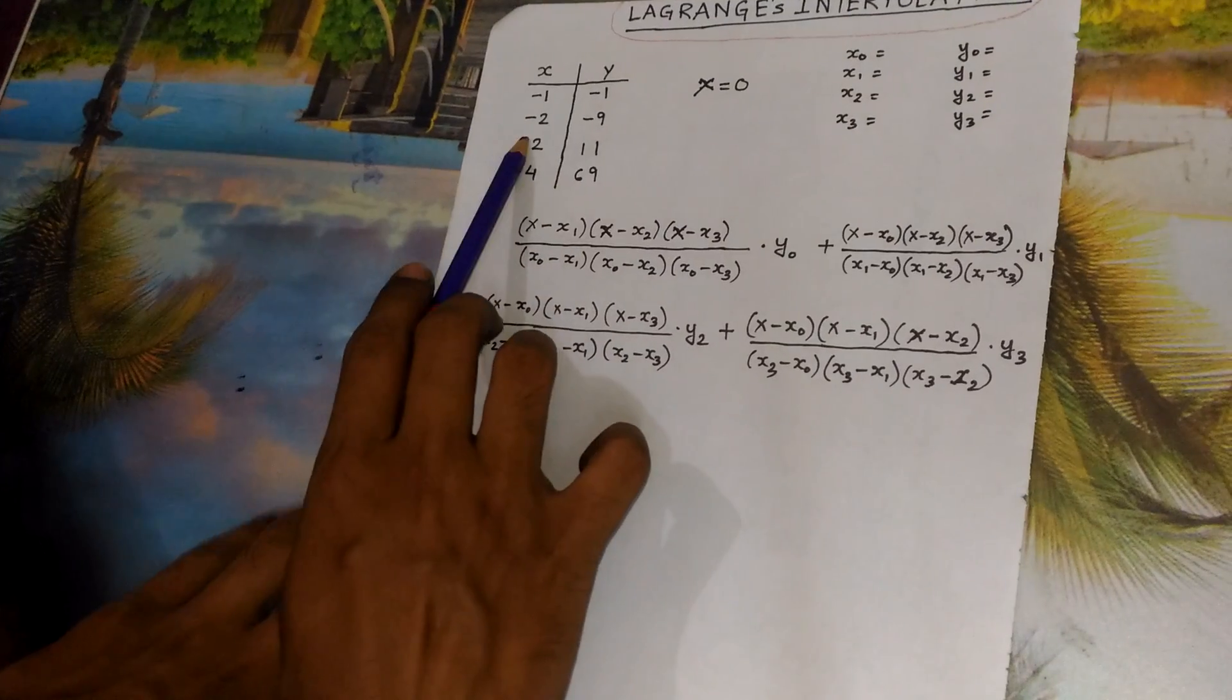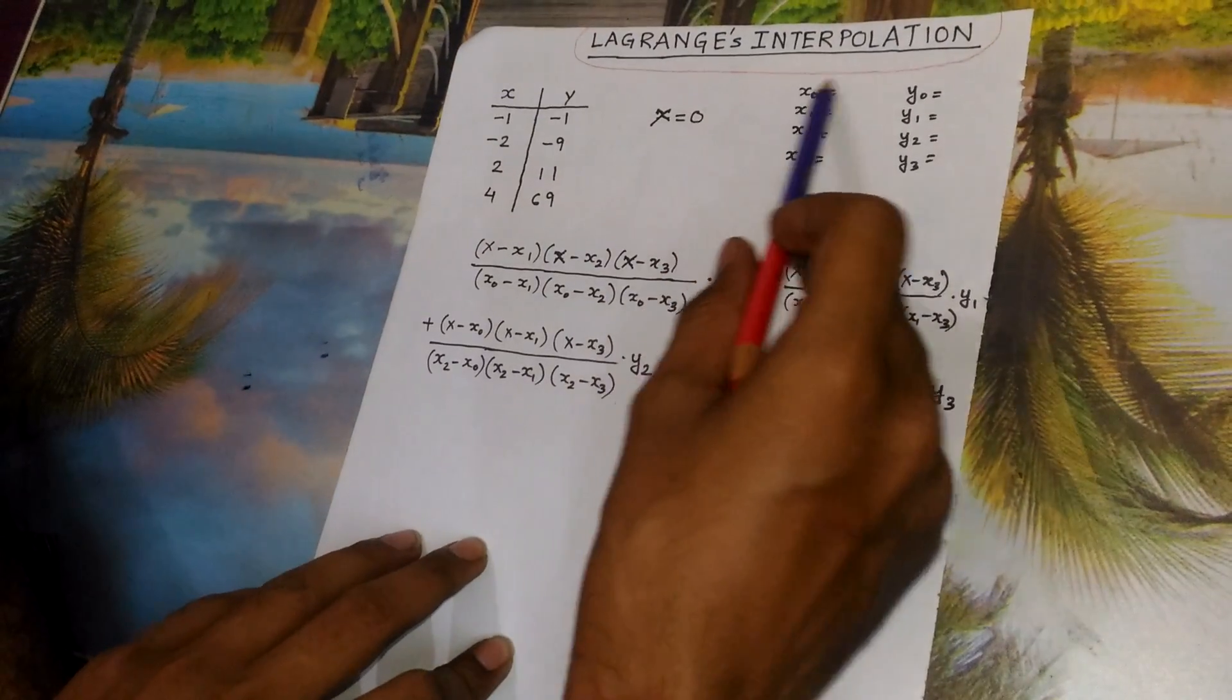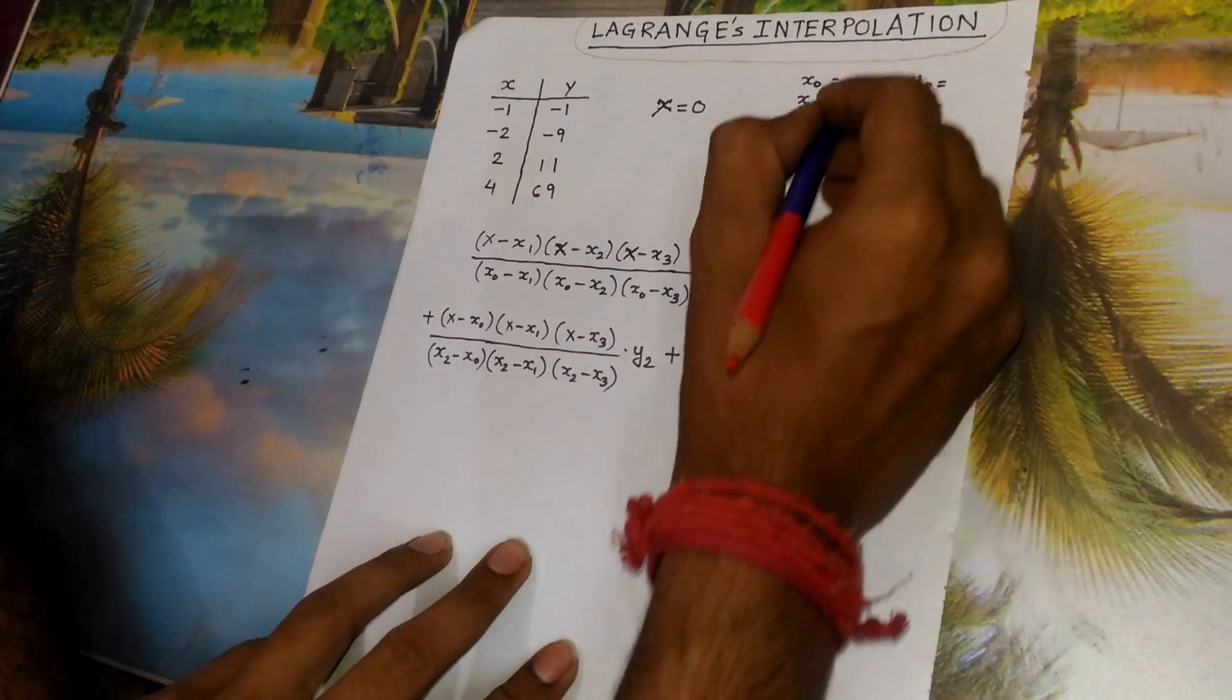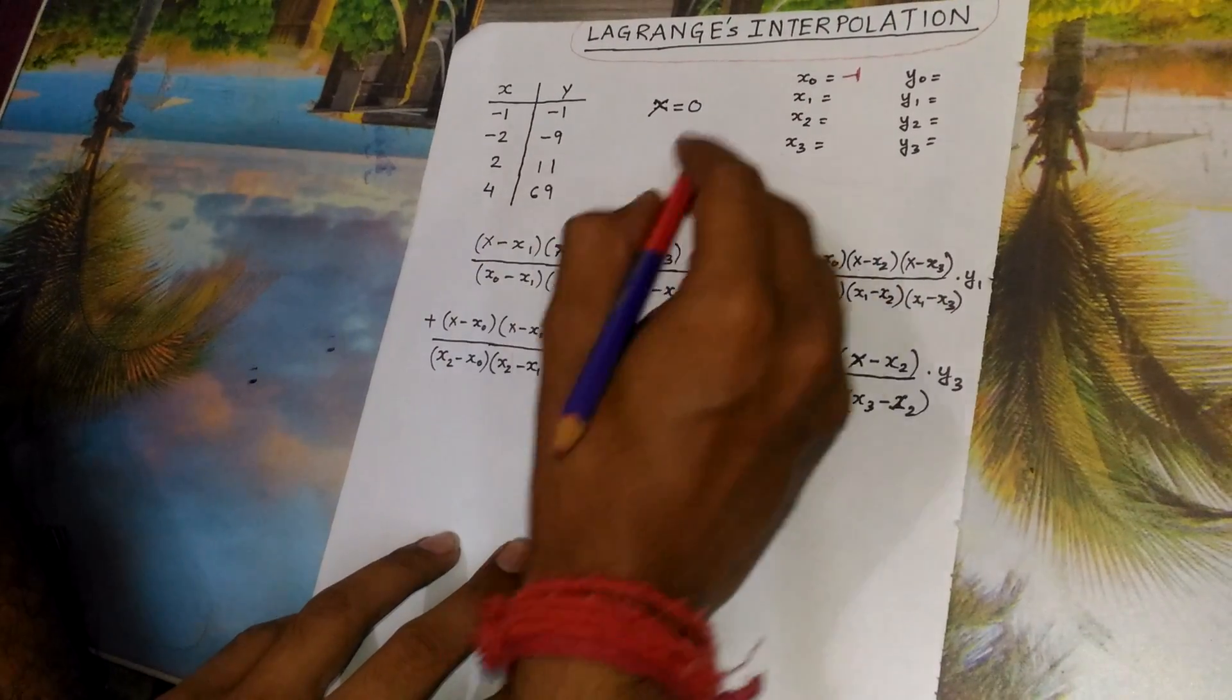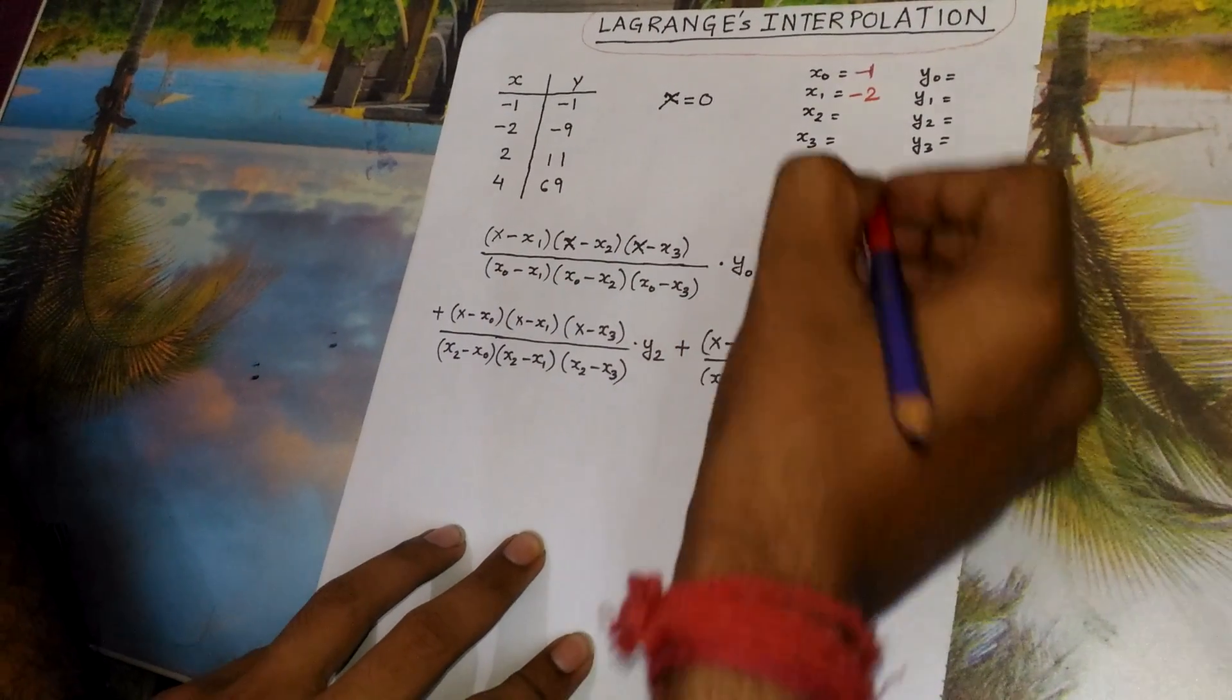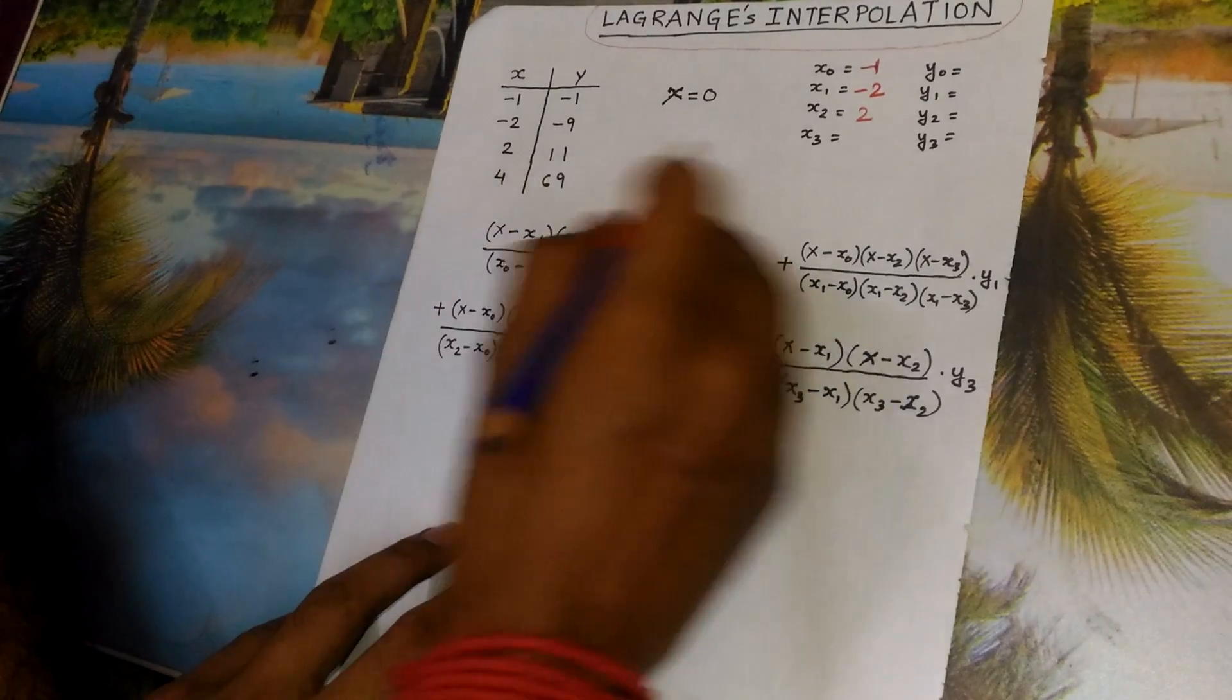Here I have made a table for x and y. Now I will fill up these gaps. x0 is minus 1, x1 is minus 2, x2 is 2, and x3 is 4.